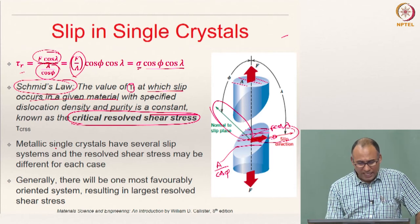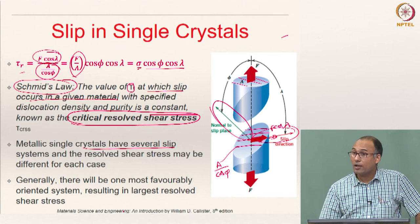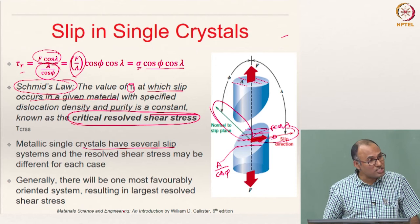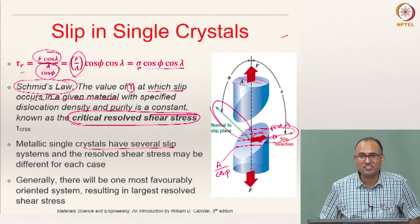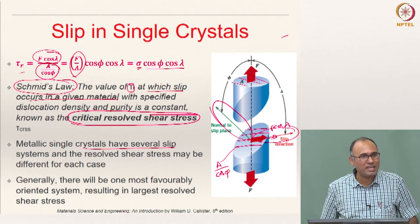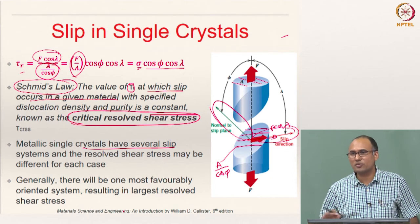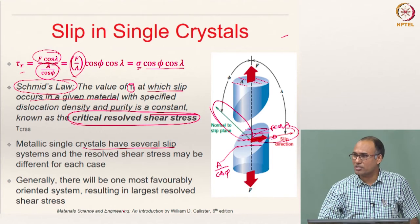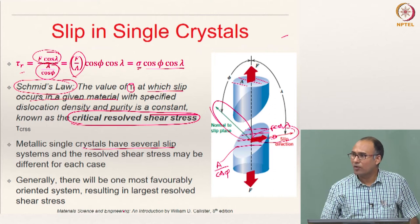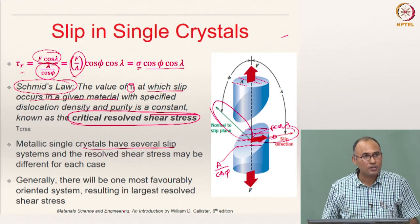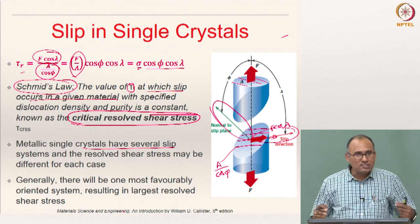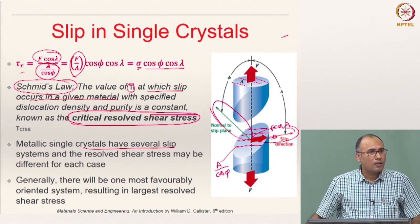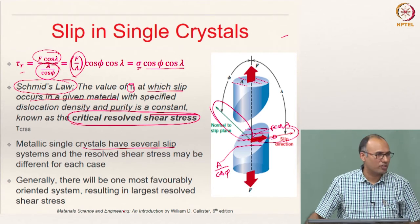Metallic single crystals have several slip systems, and the resolved shear stress may be different for each one. Not all slip systems will have the same resolved shear stress. For example, in BCC there are about 48 slip systems, and each one will have a different resolved shear stress because the directions are different. Some slip systems are favorable and some are not so favorable.